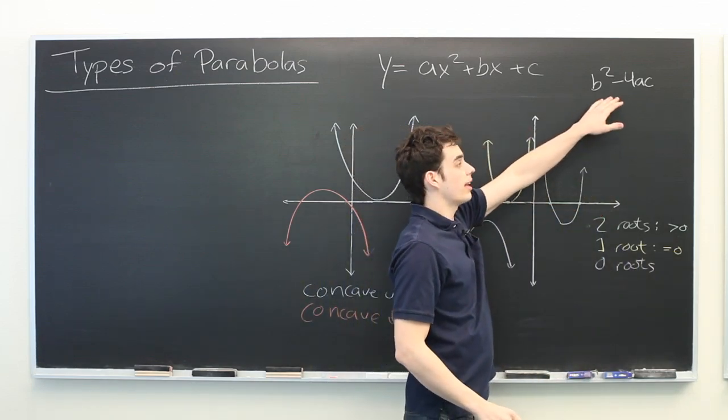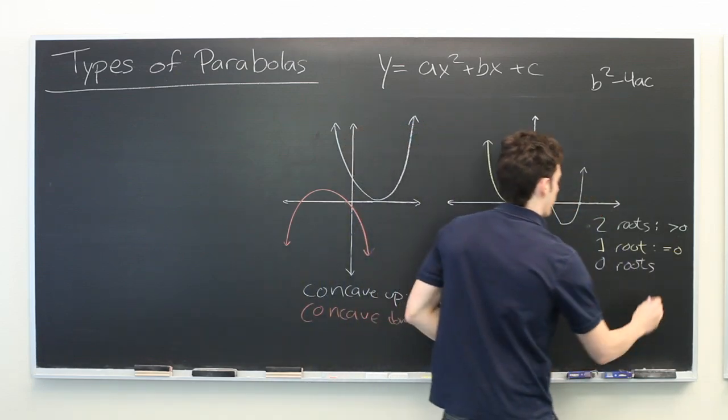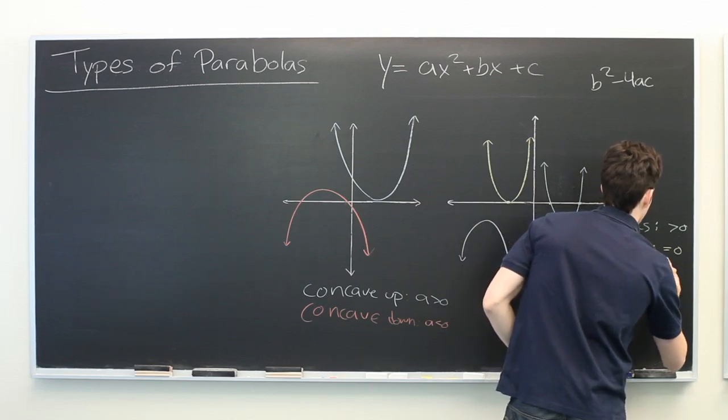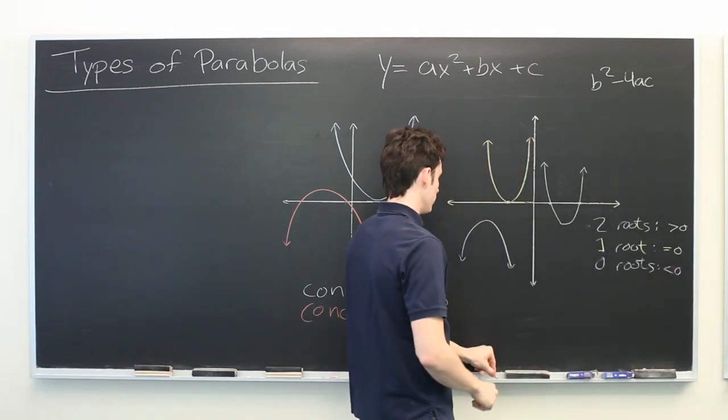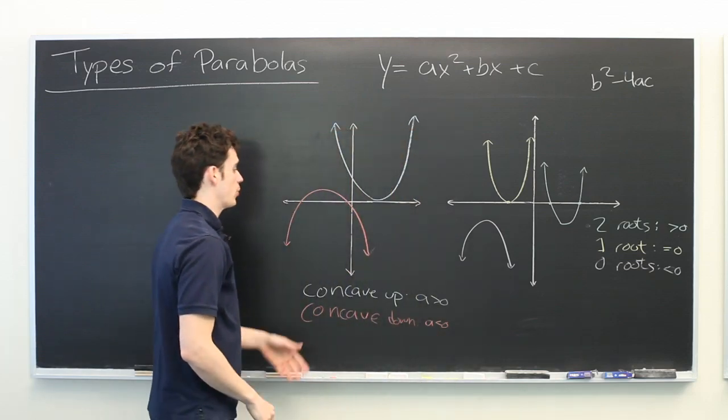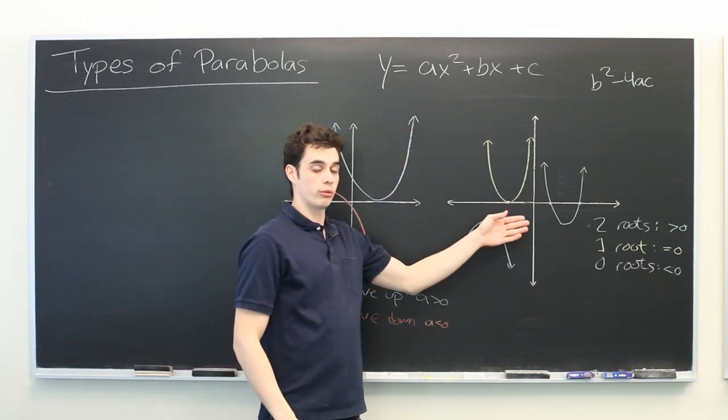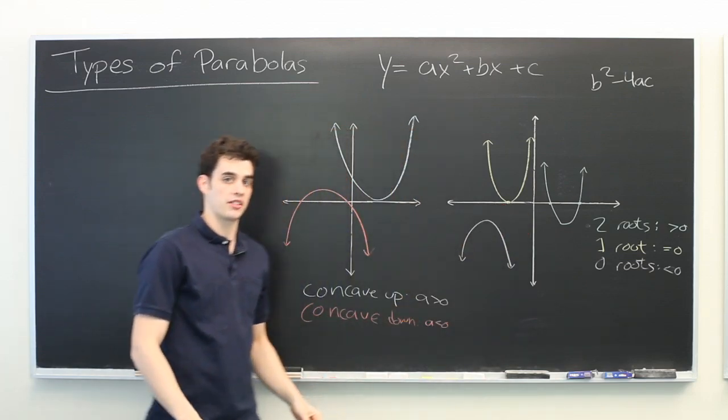And finally, if this is less than zero, then it won't have any real roots. So we have concavity and the number of roots that can be used to classify parabolas.